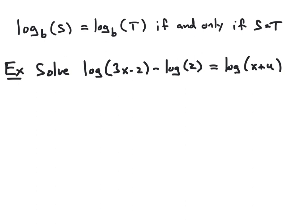In order to use the one-to-one property, we need to have a single log on the left side. Right now the left side is a difference of two logs, so using the quotient rule for logarithms, we can rewrite this as a single log by taking the quotient of 3x minus 2 and 2. So our left side becomes the common log of (3x minus 2) divided by 2, and our right side is just the log of x plus 4.